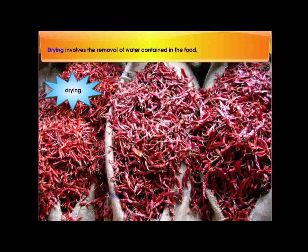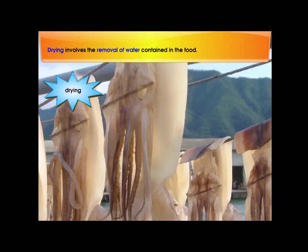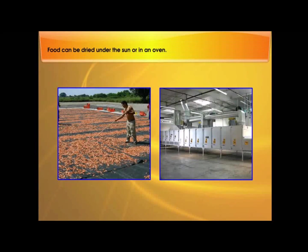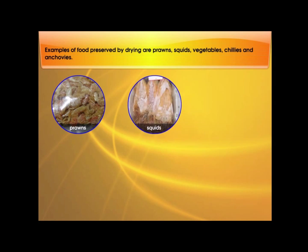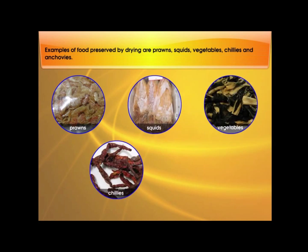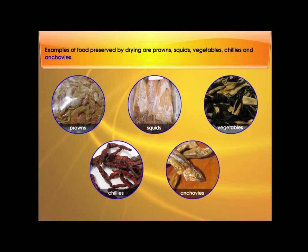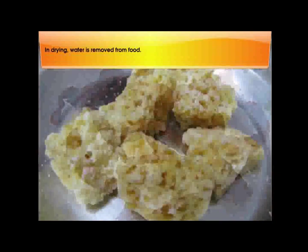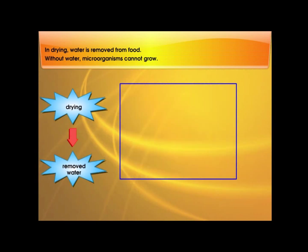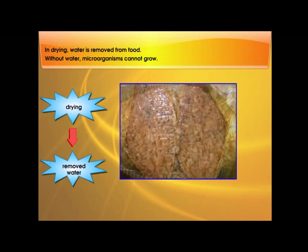Drying involves the removal of water contained in the food. Food can be dried under the sun or in an oven. Examples of food preserved by drying are prawns, squids, vegetables, chilies, and anchovies. In drying, water is removed from food. Without water, microorganisms cannot grow.